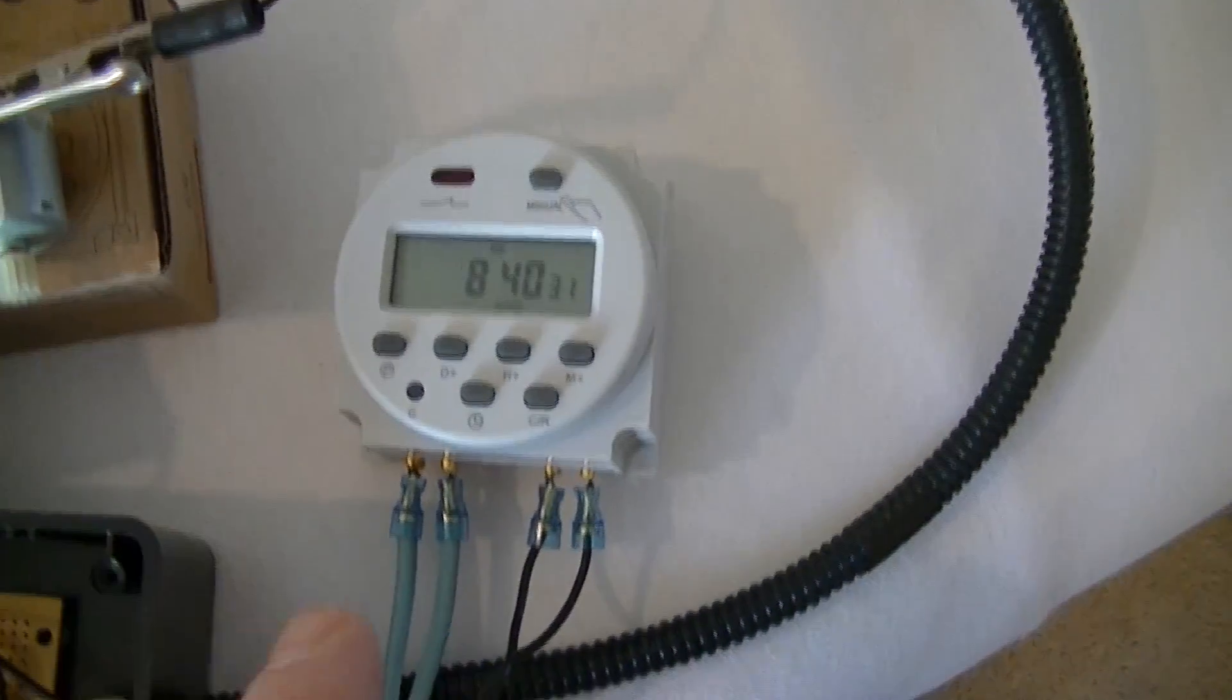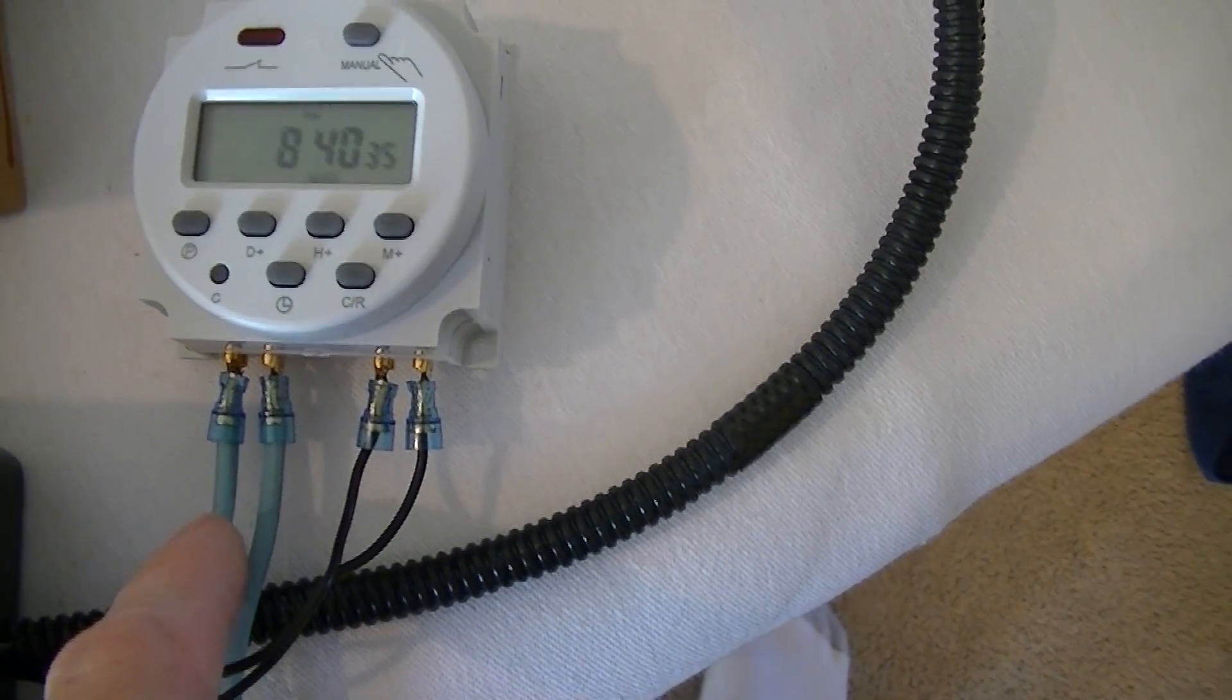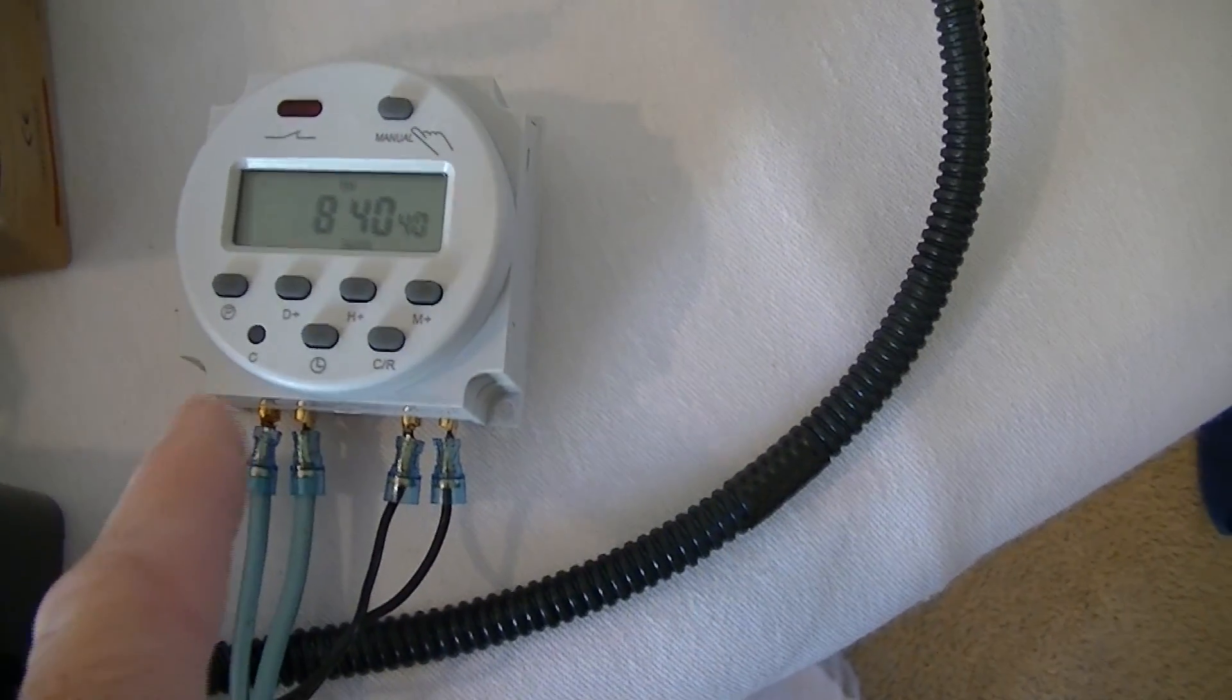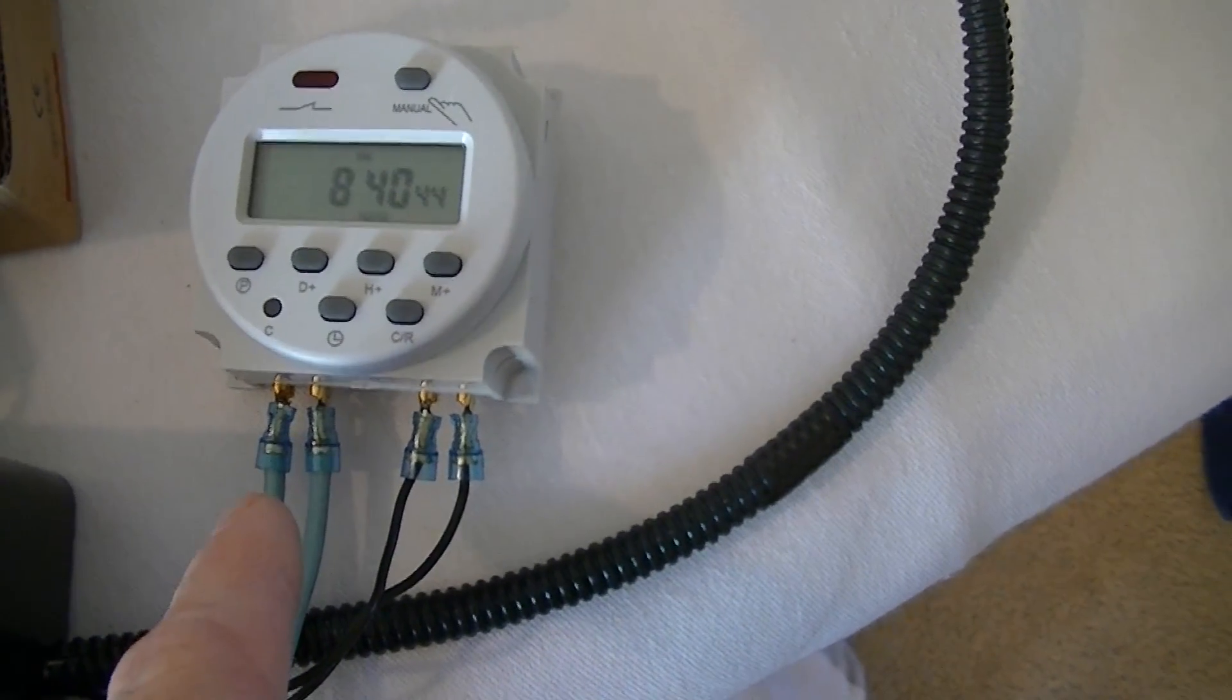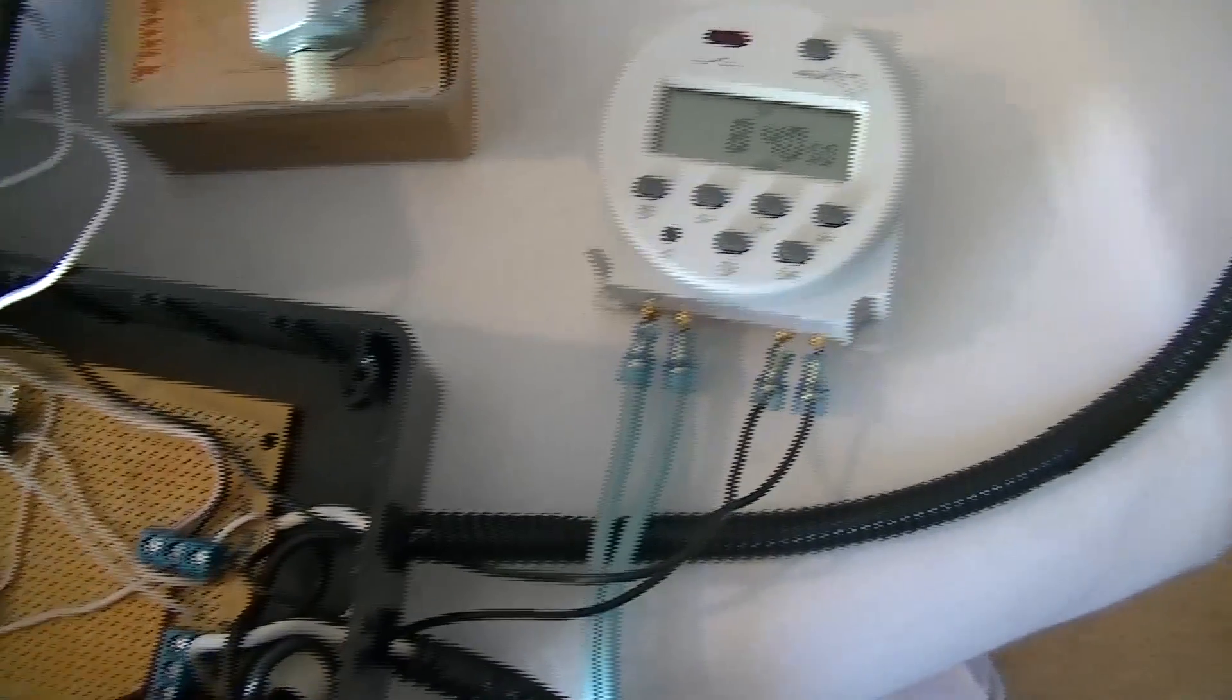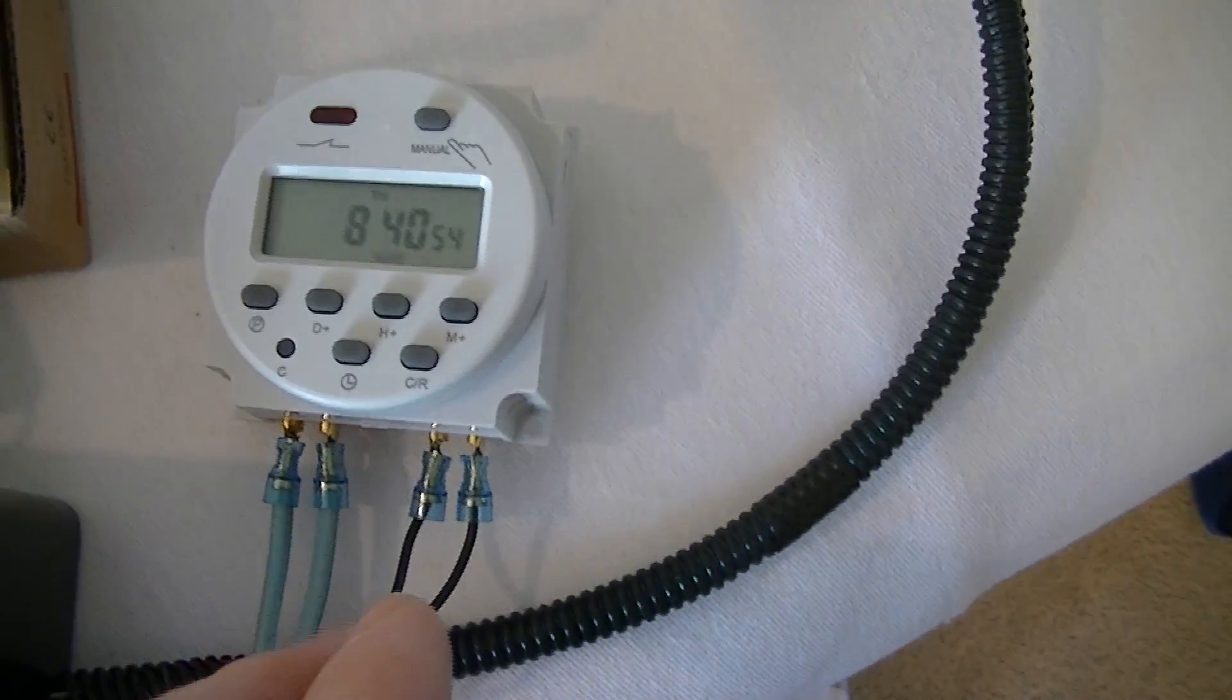This timer here is powered by 120 volts. This blue cord is 120 volts. If I had to do it again, I would get one with 24 volts or 12 volts. If I could get one powered by 12 volts, then I could use the power supply system I have set up. But I didn't do that. So I need one extra plug.